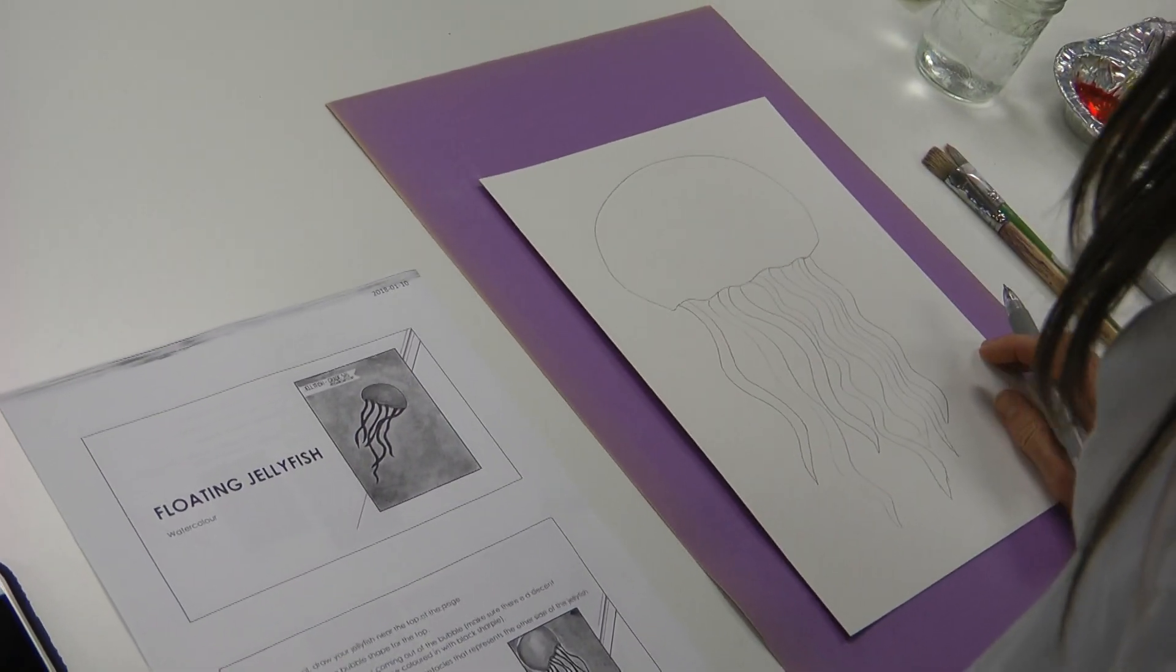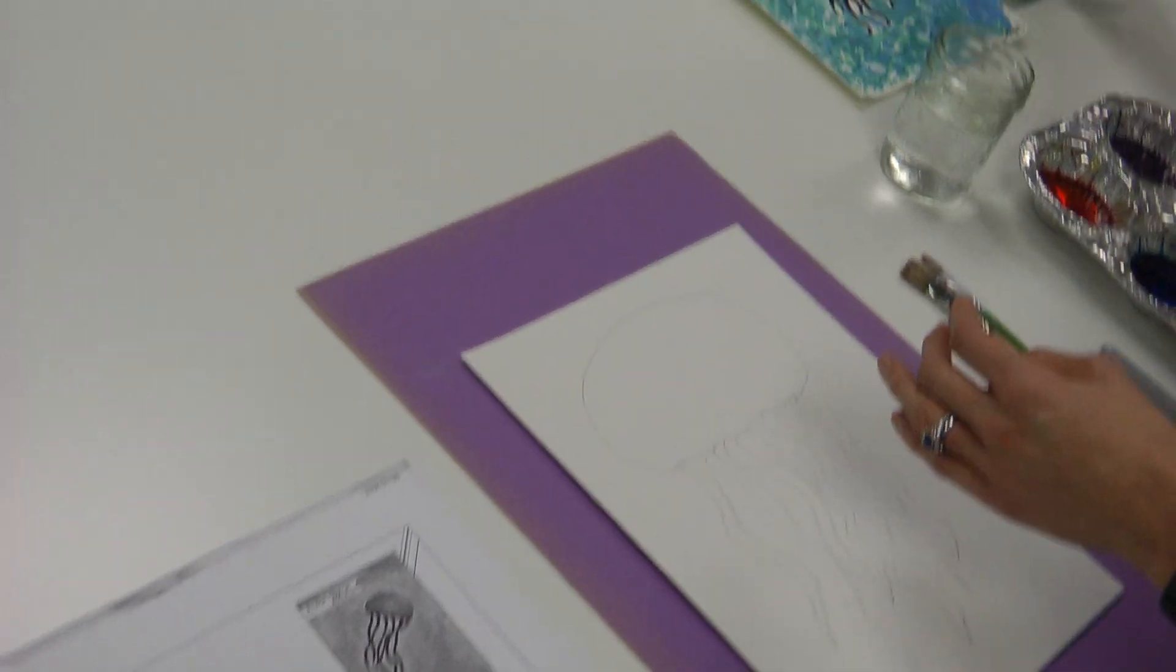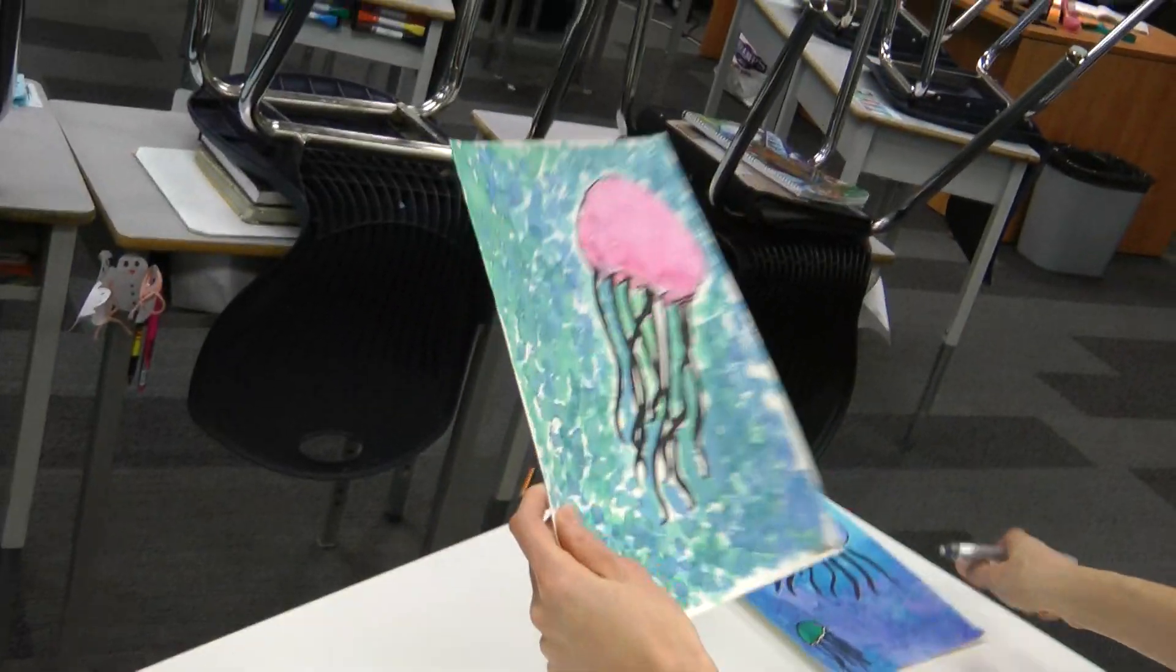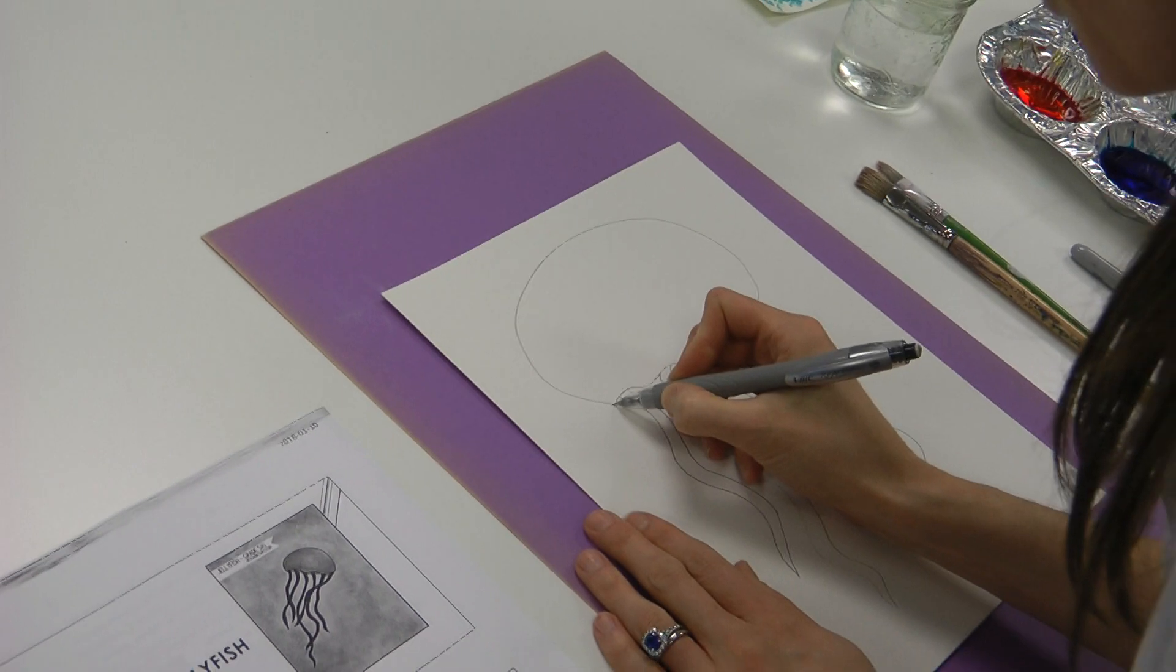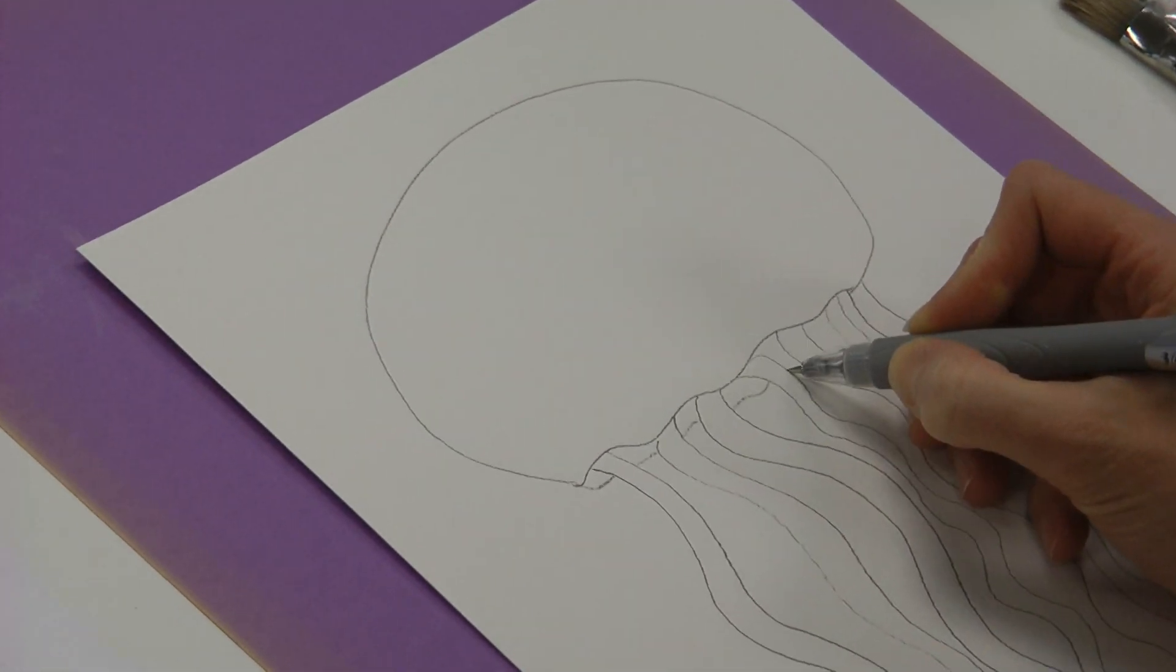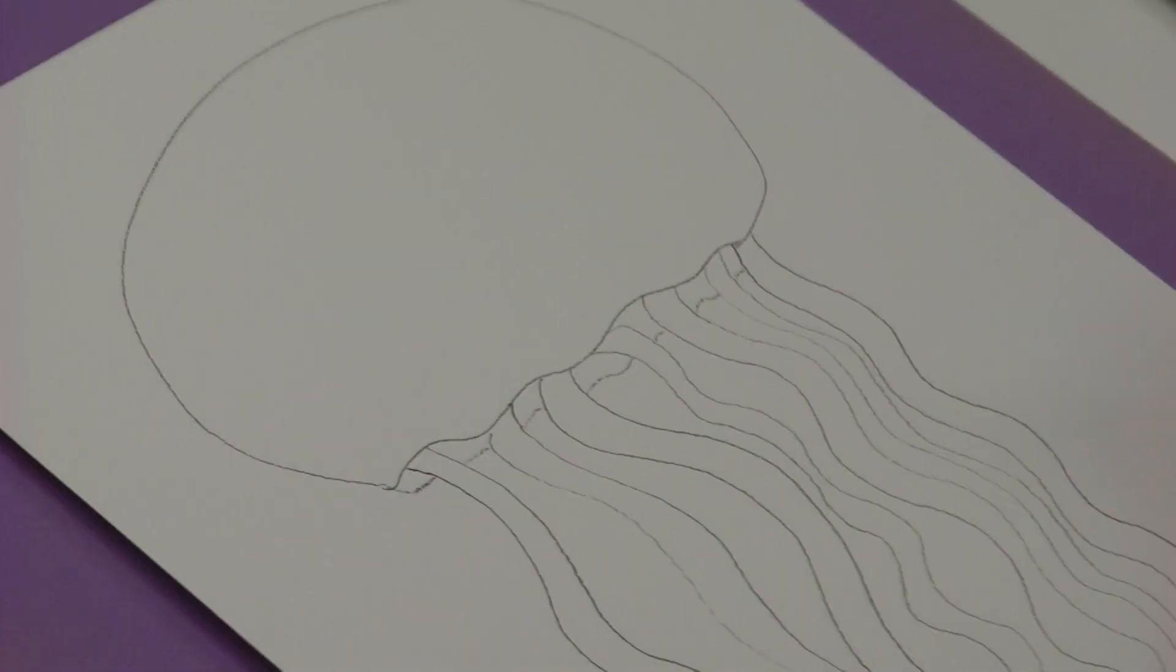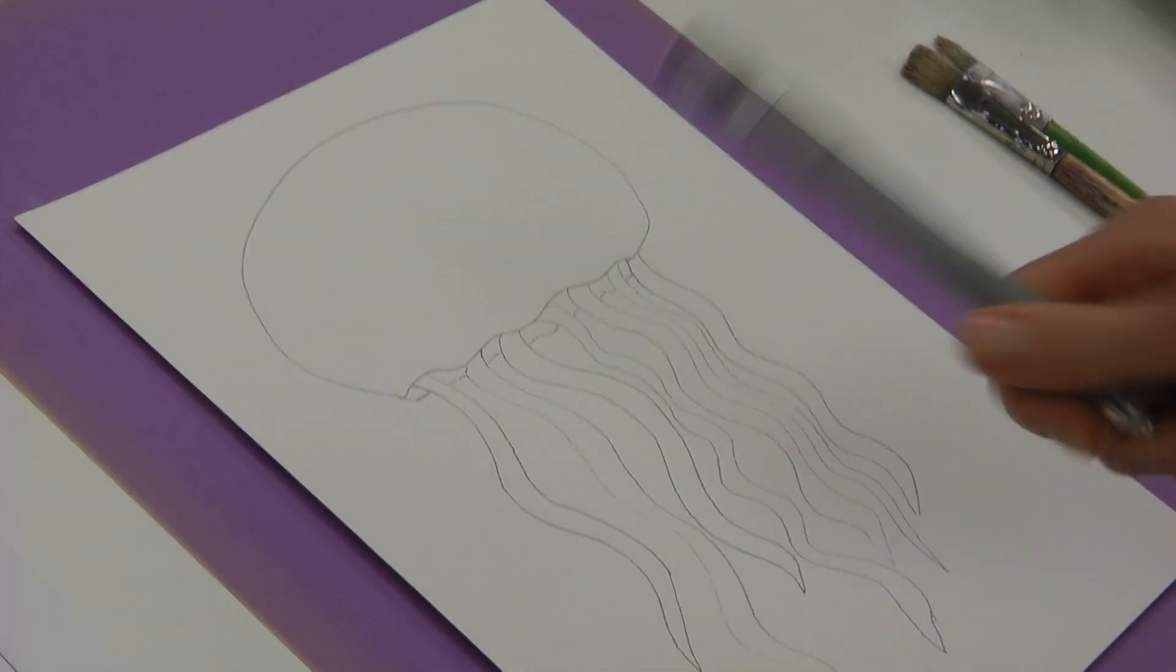And then it says, step three, draw a line behind the tentacles to represent the other side of the jellyfish. So you get an idea of what I'm talking about. Take a look at this. See, we're going to do that back thing. You can see it on this one too. So I'm just going to draw behind here just lightly across like that. You might want to give it like some swirls so it doesn't look like you just drew a straight line. Because, well, jellyfish aren't straight.